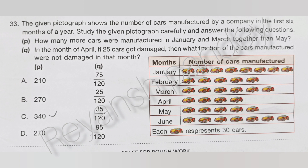The given pictograph shows the number of cars manufactured by a company in the first 6 months of the year. Study the pictograph carefully and answer the following questions. Question P: How many more cars were manufactured in January and March together than in May? The answer is B — 270.